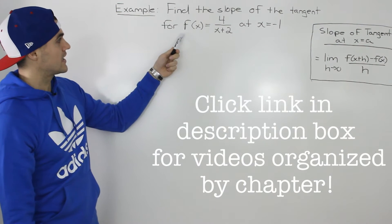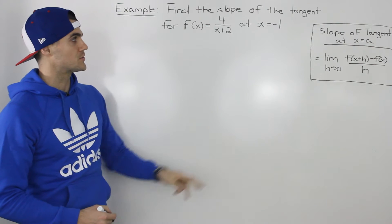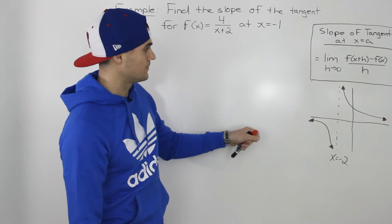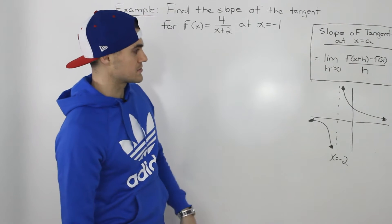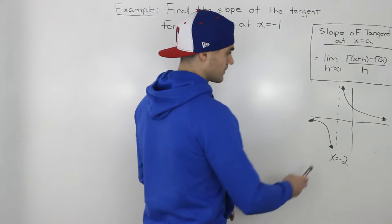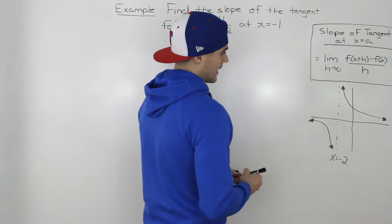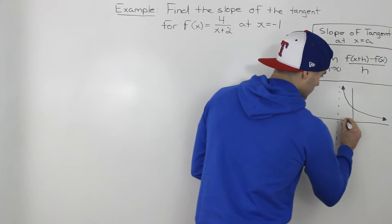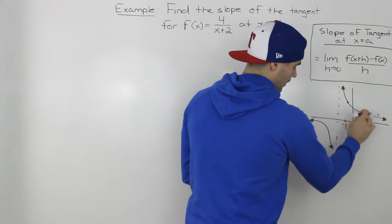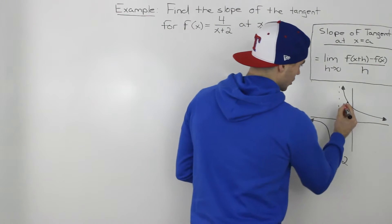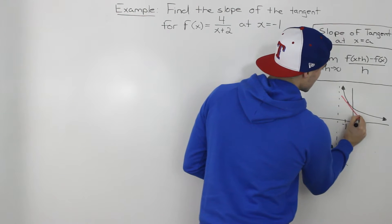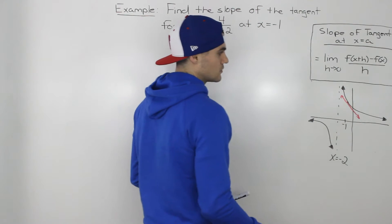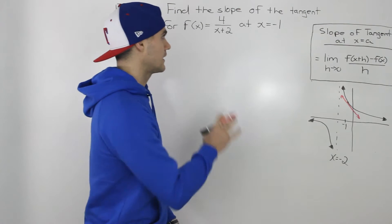Moving on to the next example, we have to find the slope of the tangent for f(x) = 4/(x+2) at an x value of negative 1. I drew out the graph of 4/(x+2) — it's a rational function with a vertical asymptote at x = -2. We have to find the slope of the tangent at x = -1, which is this red line that touches the function only at that point.